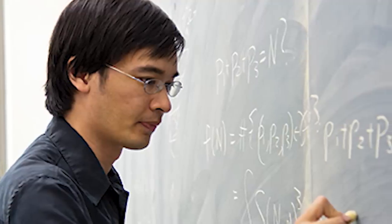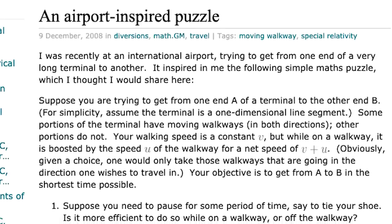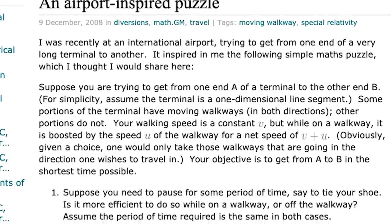Terence Tao, who many regard as one of the greatest living mathematicians, introduced this problem a little over a decade ago on his blog and it got a lot of attention. Now for the first question, likely your intuition was correct: it is more efficient to tie your shoes on the walkway.